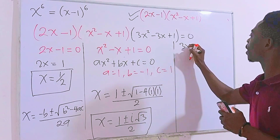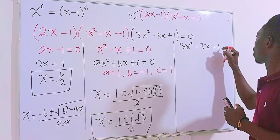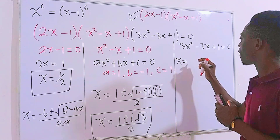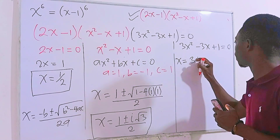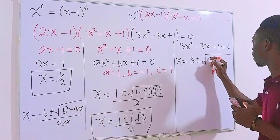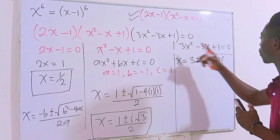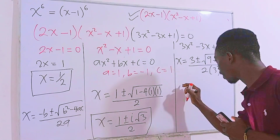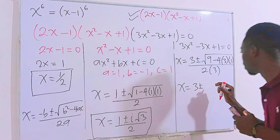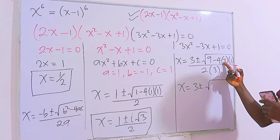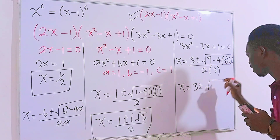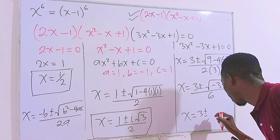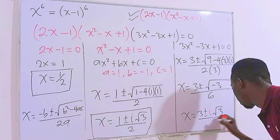For the last factor, 3x² minus 3x plus 1 equals 0, we again use the quadratic formula. Here a = 3, b = -3, c = 1. So x = (3 ± √(9 - 4·3·1)) / (2·3) = (3 ± √(9 - 12)) / 6 = (3 ± √(-3)) / 6, which gives x = (3 ± i√3) / 6. These are also two complex solutions.